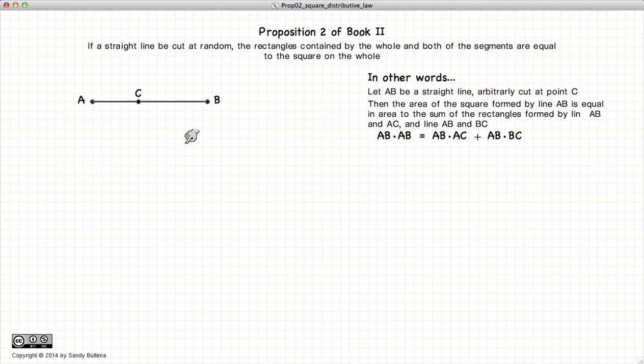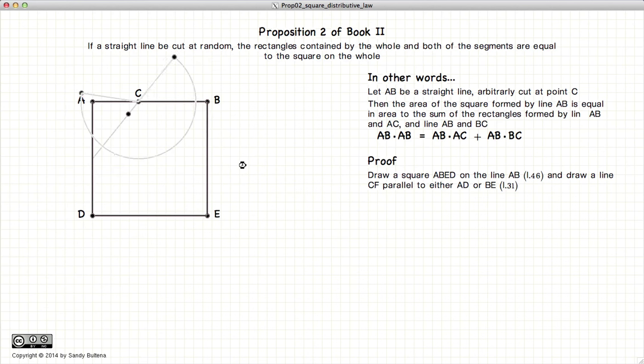So let's begin. The first thing we're going to do is draw a square on the line segment AB and draw a line parallel to AD from C to F.